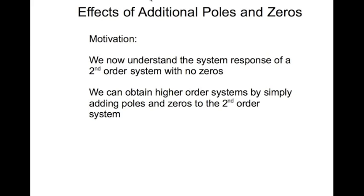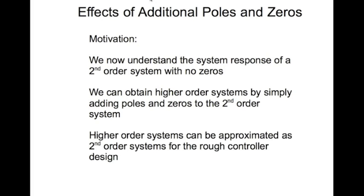Now we can get higher order systems, third order, fourth order, fifth order systems, simply by adding poles and zeros to the canonical second order systems. On the other hand, we can take a higher order system and approximate to the second order, simplest second order system. So if you have a fourth order system, maybe you can knock off two orders to get an approximate second order system.